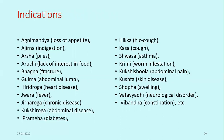Lashuna has many indications. It is used in Agnimandya, Ajirna, Arsha, Aruchi, Bhagna, Gulma, Hrud Roga, Jvara, Jirnajvara, Pakshiroga, Prameha, Hikka, Kasa, Shwasa, Krimi, Pakshisula, Kushtha, Shotha, Vatavyadhi, and Vibandha. Mainly it is used in Vatavyadha (neurological disorders), Hrid Roga (heart disease), and GI problems.